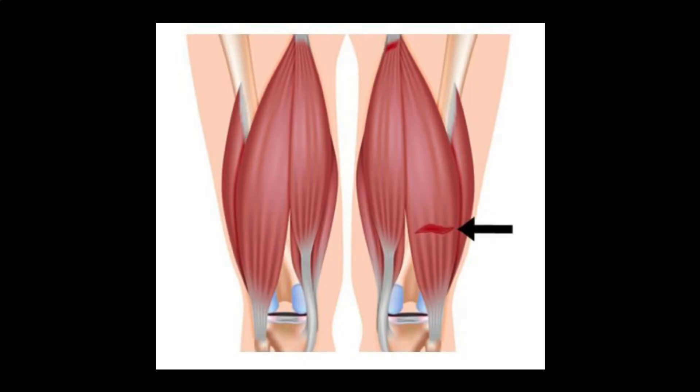A hamstring strain, also known as a pulled hamstring, is caused by a rapid forceful contraction or a violent stretch of the hamstring muscle group, which causes high mechanical stress leading to the over-stretching or tearing of muscle fibers. Hamstring strains most commonly occur in athletes participating in sports requiring sprinting such as track and field, football, soccer, and basketball. Hamstring injuries are less common in those training for general fitness or physique development.